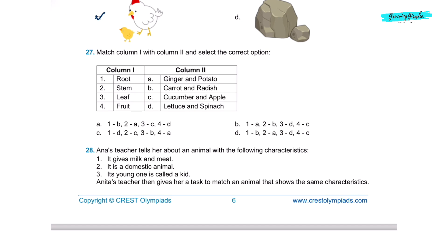Question 27. Match column 1 with column 2 and select the correct option. Roots are carrot and radish. Stems are ginger and potato. Leaves are lettuce and spinach. And fruits are cucumber and apple. So correct option is 1B, 2A, 3D, 4C. Option D is the correct answer.